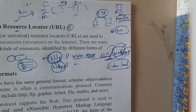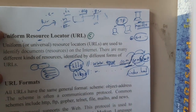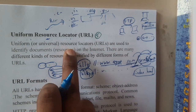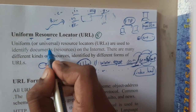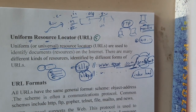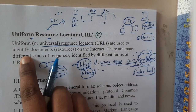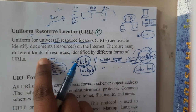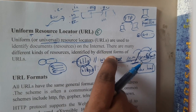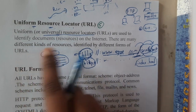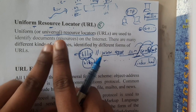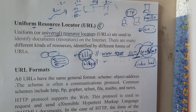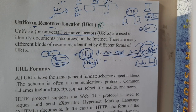So basically, URL is nothing but Uniform Resource Locator - or Universal Resource Locator, as universal is more fitting. It is used to identify the documents, those being resources on the internet. There are many different kinds of resources identified by different forms of URLs. For example, google.com and education4fun.com are both different websites, each unique in their own respect.